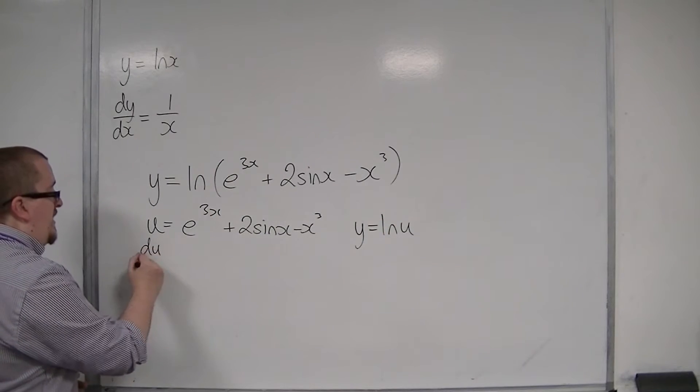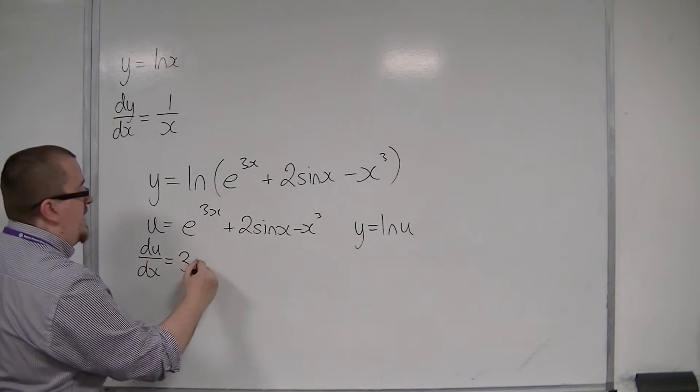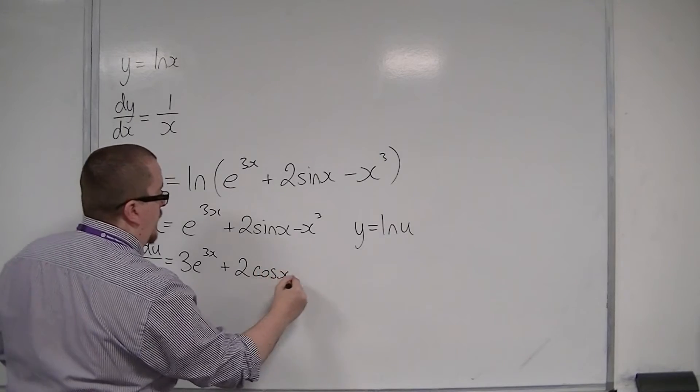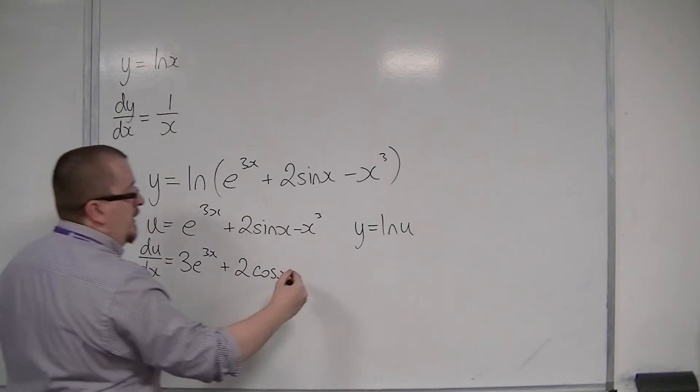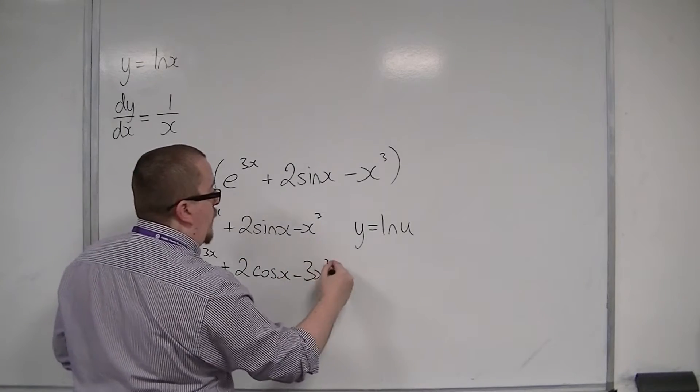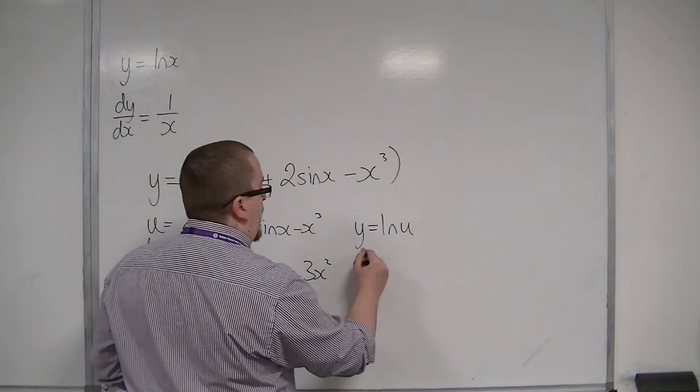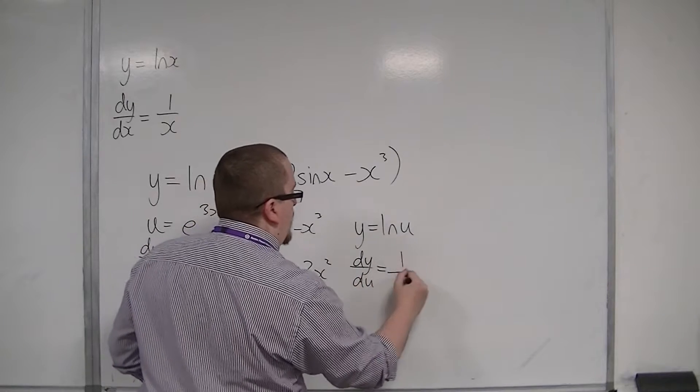So differentiating u with respect to x, I would get 3e to the 3x plus 2 cos x, sin differentiates to cos, minus 3x squared. And then if I differentiate y with respect to u, I would get the 1 over u.